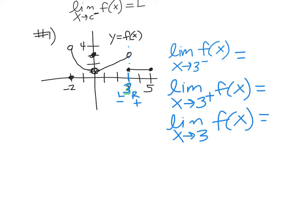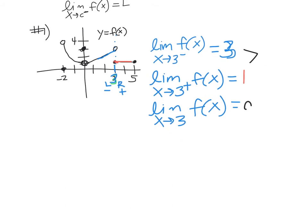As I walk along the graph on the left side of 3, what y-value am I getting closer and closer to? 3. Now going towards 3 from the right-hand side, the y-value I'm getting closer to is 1. These have to be equal for the limit to exist at 3. So the limit does not exist — there's a big gap, and they're not approaching the same number.